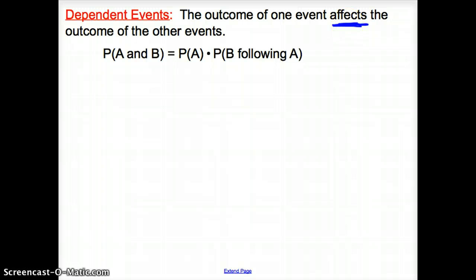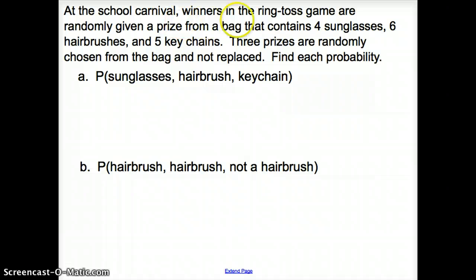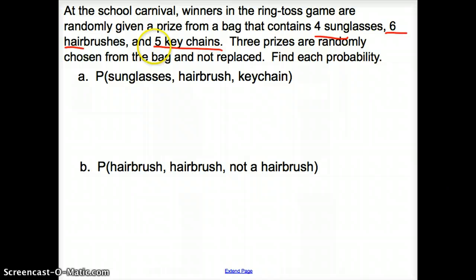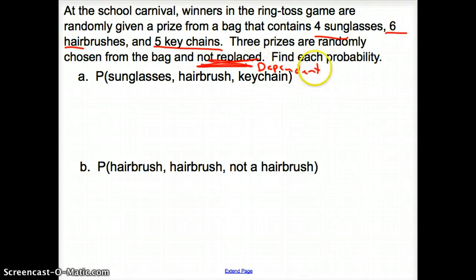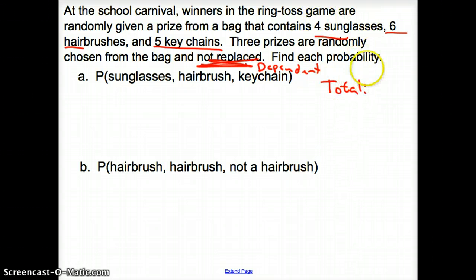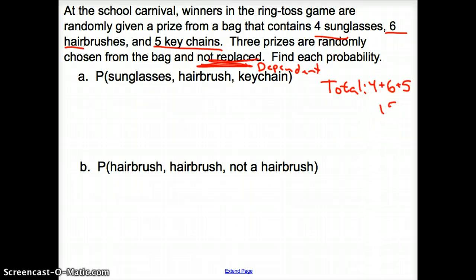At a school carnival, winners in a ring toss game are randomly given a prize from a bag containing four sunglasses, six hairbrushes, and five keychains. Three prizes are randomly chosen and not replaced — 'not replaced' is the key word, meaning these are dependent events. First, we find the total: four plus six plus five equals 15.